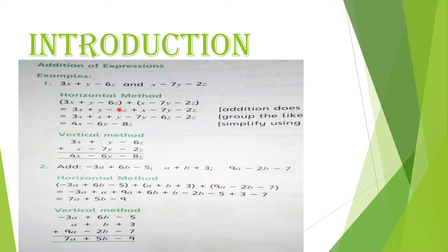Horizontal method mein: pehli expression ko bracket mein likhen, phir darmiyaan mein plus ka sign lagaen, aur doosri expression bhi bracket ke andar likhen. Jaise (3x plus y minus 6z) plus (x minus 7y minus 2z). Ab bracket open karen — plus sign ke saath pehli bracket as it is aa jaegi: 3x plus y minus 6z.